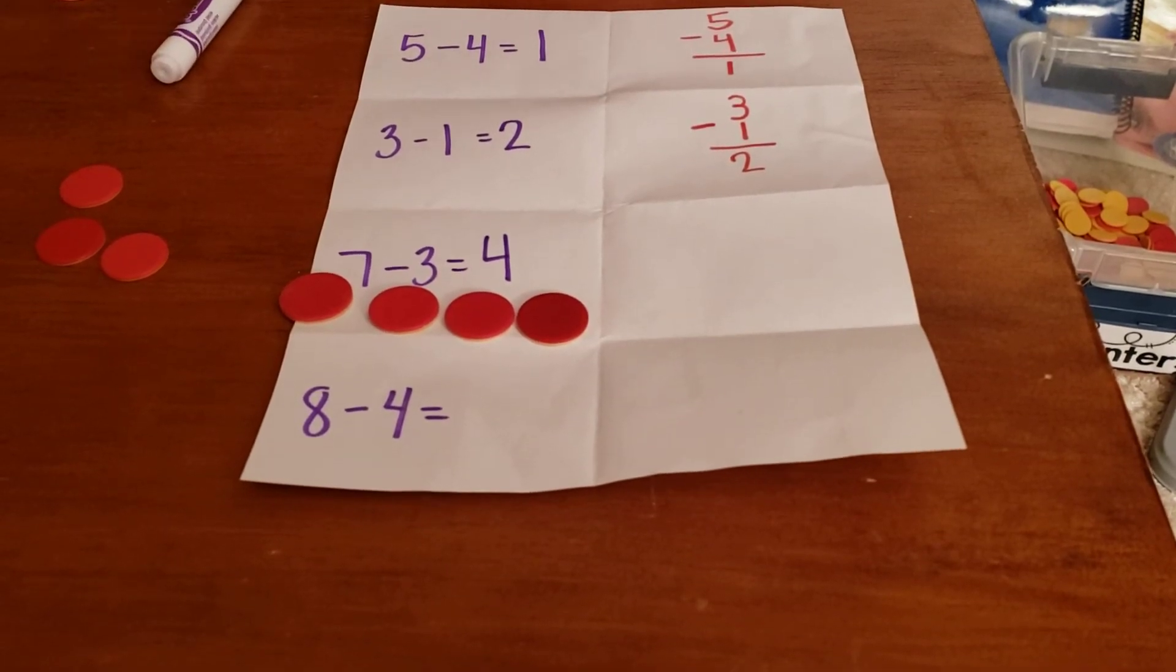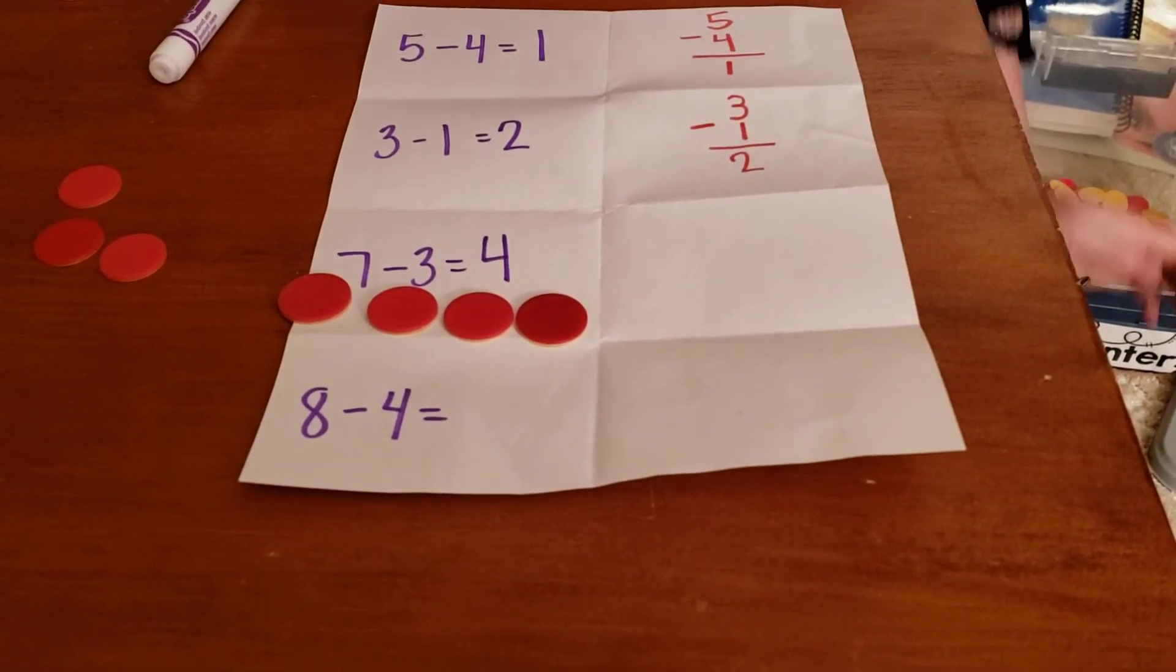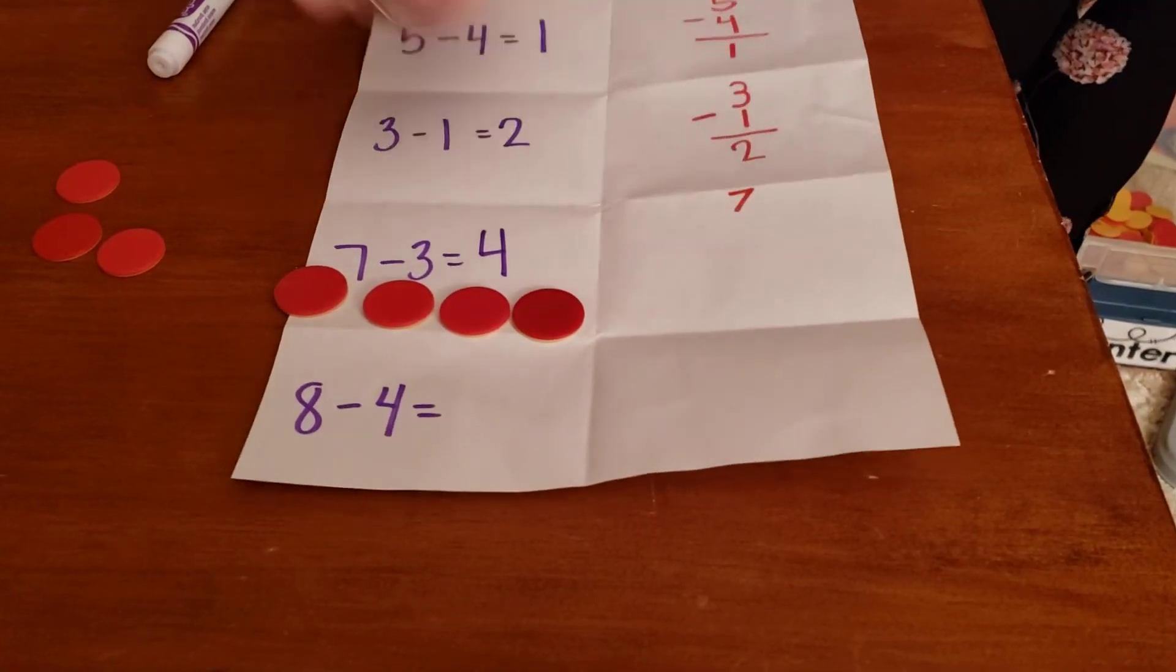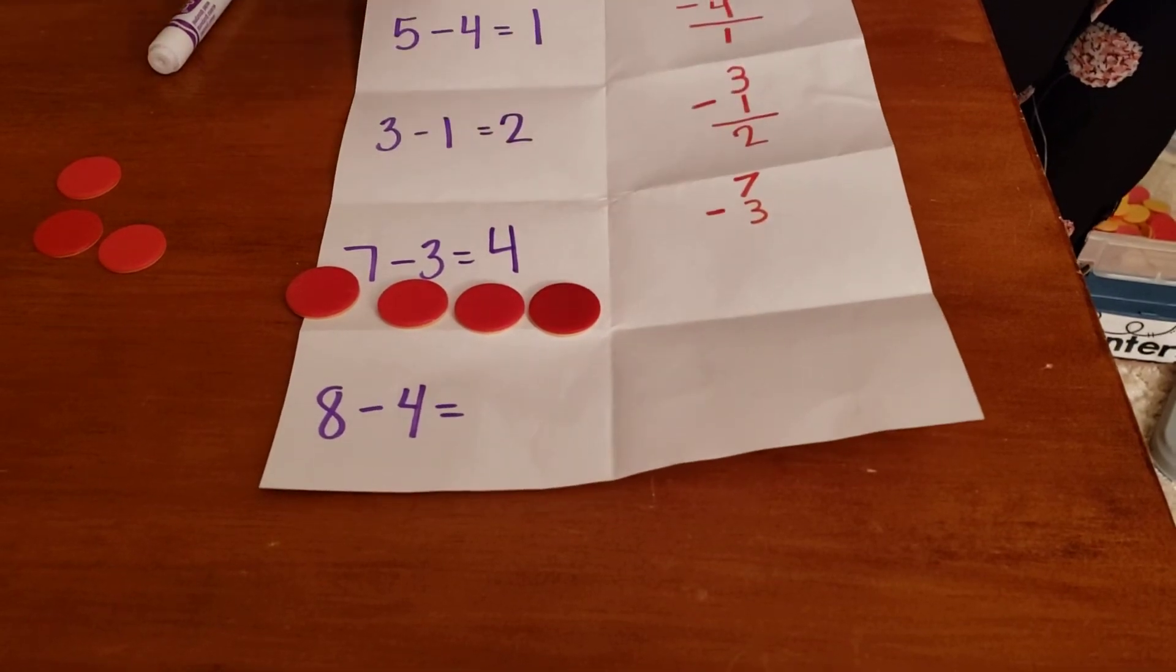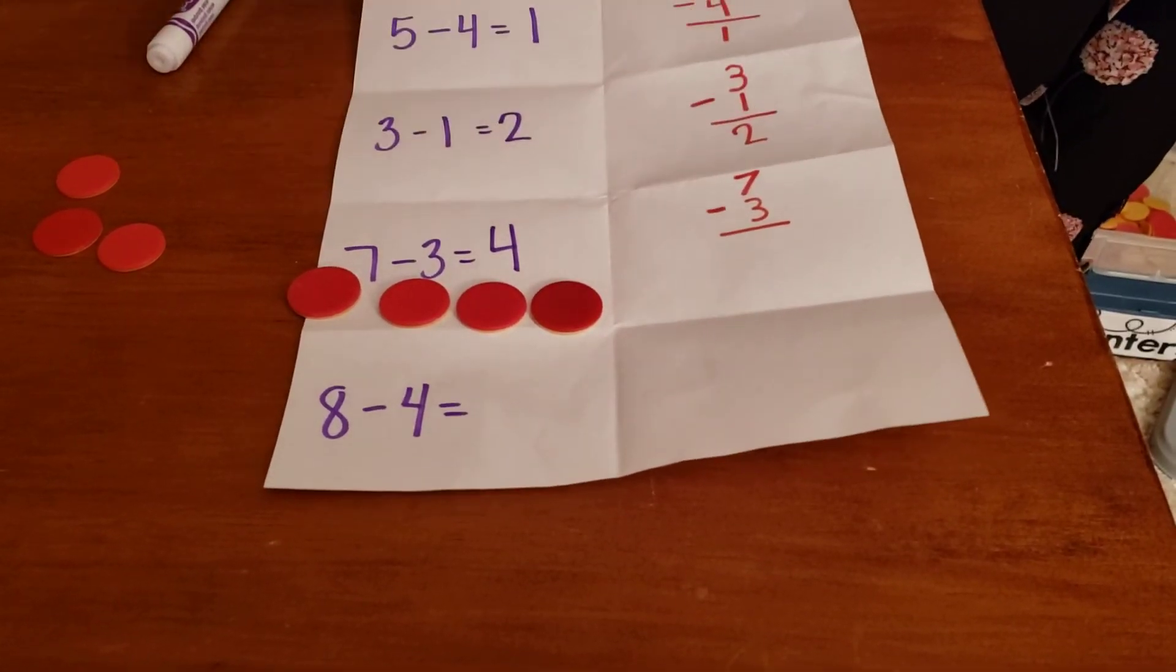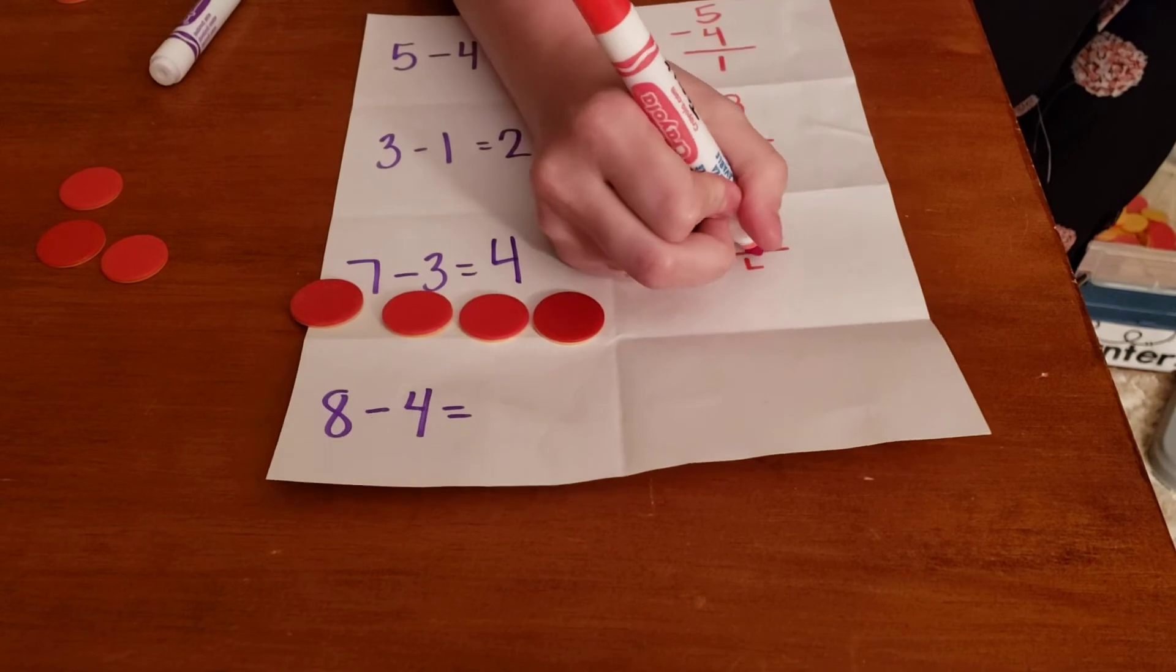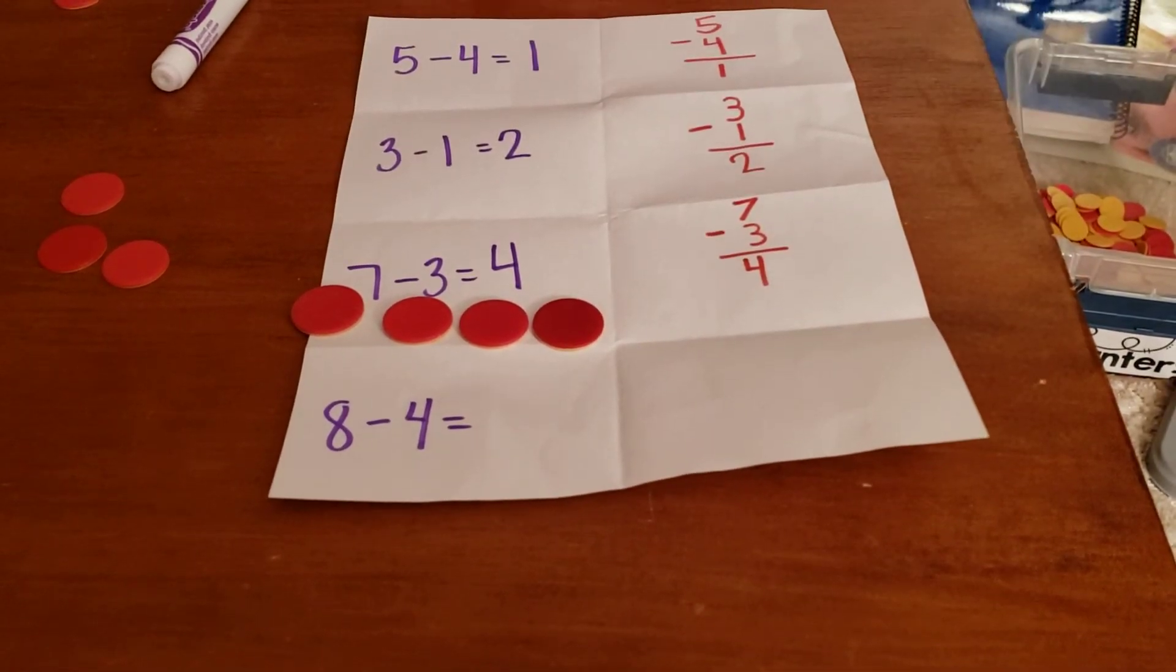Okay, let's flip it so we can write it up and down. Seven minus three equals four. Does yours look like mine?